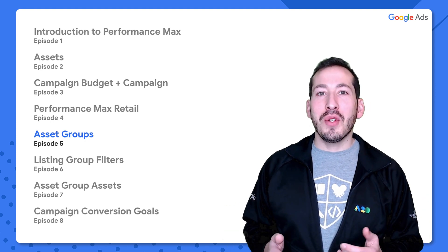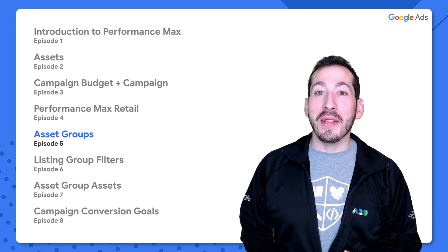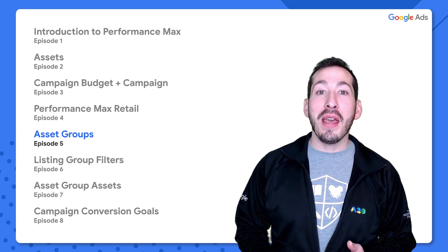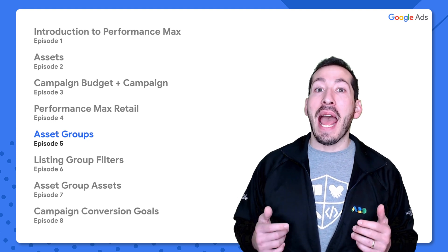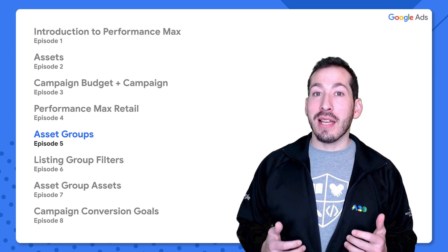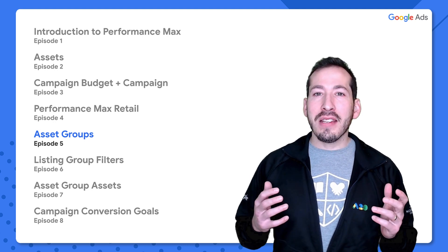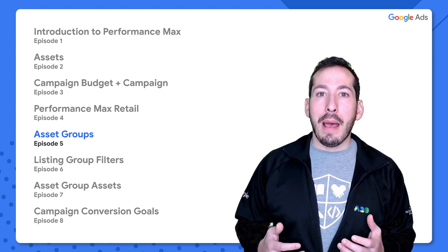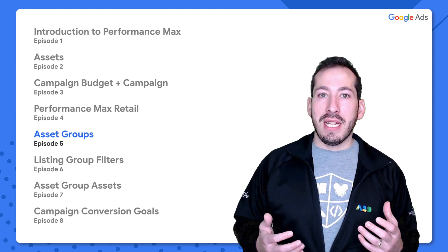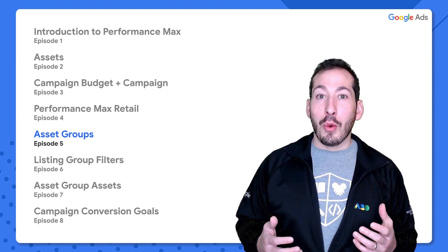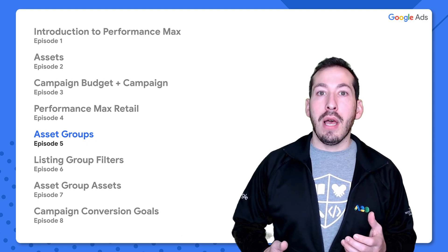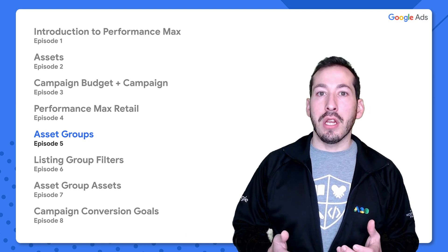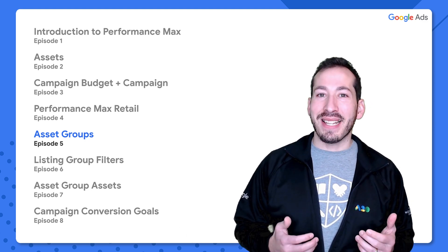Hey everybody and welcome to episode 5 of Performance Max for Developers. My name is Devin, I'm a Developer Relations Engineer supporting the Google Ads API, and today we're going to be talking about asset groups. This is a really exciting topic because asset groups are really the crux of PMAX campaigns. Google uses automation technologies to serve the right ads, which are generated dynamically to the right people at the right times using budget allocation, and we provide signals to that technology. These asset groups are exactly how we do that.